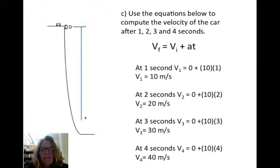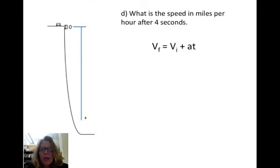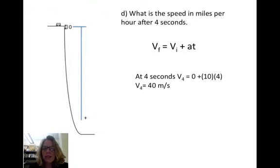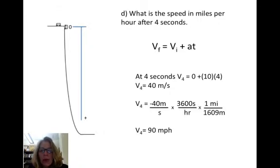Now the next one is the speed in miles per hour after four seconds. This is the equation we use, and this is what we've got after four seconds: a speed of 40 meters per second. Now this is a unit conversion problem where we want to take meters per second and find out how fast is it going in miles per hour.